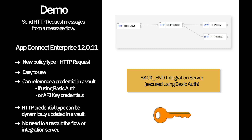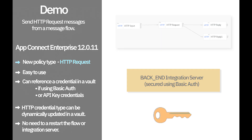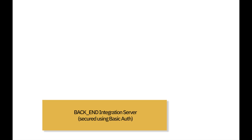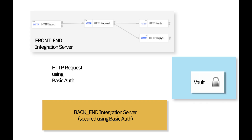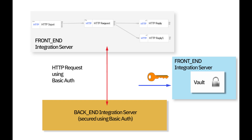I'm going to use the same scenario as I did when I previously showed how to use basic auth with the HTTP request node. But instead of using a security profile, I'm going to use an HTTP request policy. I have a back-end integration server that is secured using basic auth. I'm going to create a flow and a policy and they will be deployed to a front-end integration server. I will create a credential in a vault which is in the front-end integration server as well, and show how the HTTP request node can use the policy to access the back-end web service.